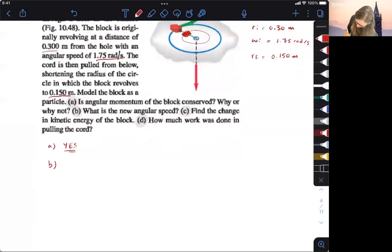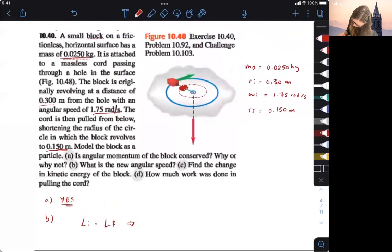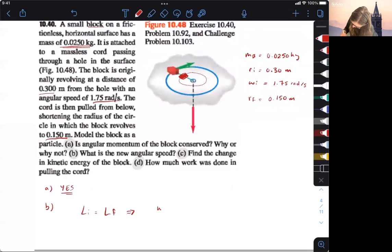We know LI is equal to LF. And then for the initial angular momentum, we know that WI times II is going to be equal to WF times IF here.